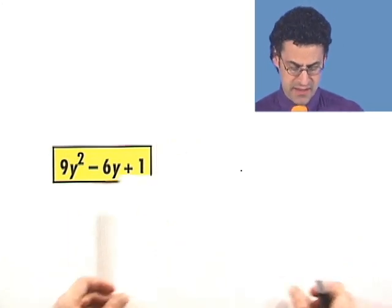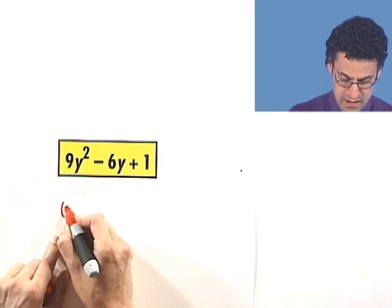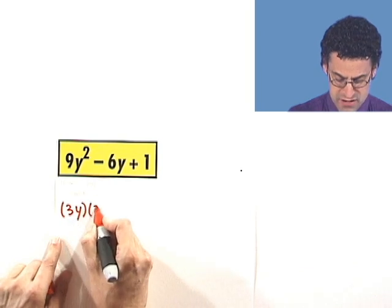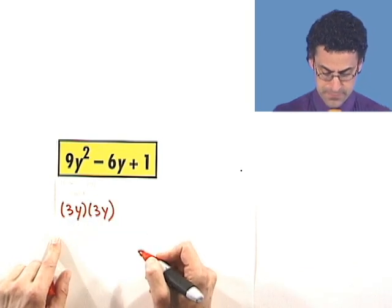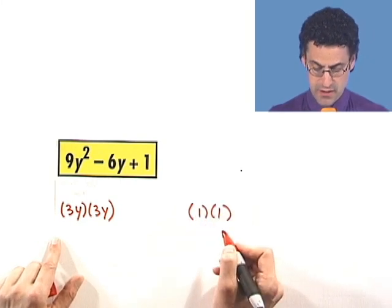Again, I can write this as 9y squared is the same thing as 3y times 3y. I can write the 1 as 1 times 1. That's a perfect square.